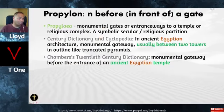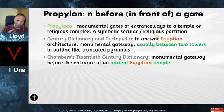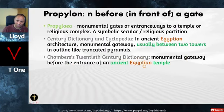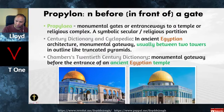We spoke of those pillars — they're called propylon. They are pillars before or in front of the gate. They come from the word 'propiliae,' meaning monumental gates or entranceways to a temple or religious complex — a symbolic secular/religious partition. In ancient Egyptian architecture, it was a monumental gateway usually between two towers in outline like truncated pyramids. The propylon is an ancient Egyptian practice. In Chambers' 20th Century Dictionary it's a monumental gateway before the entrance of an ancient Egyptian temple — so these were derived from Egyptian practices.